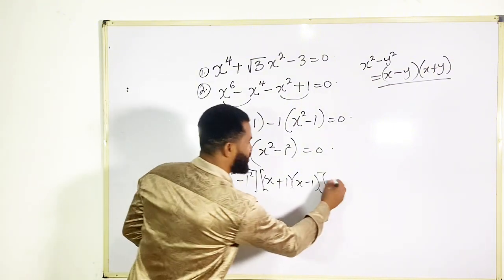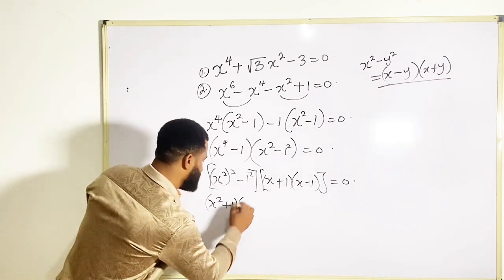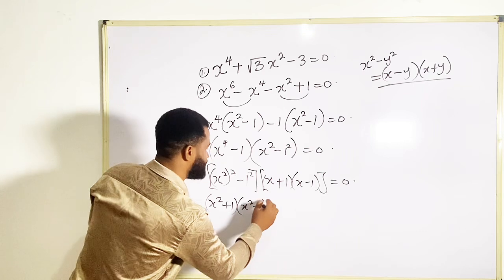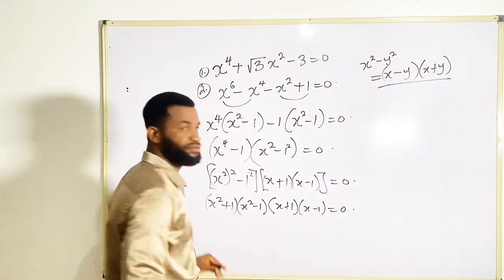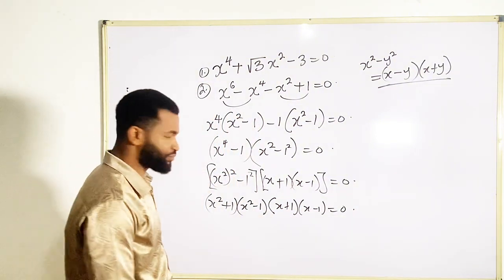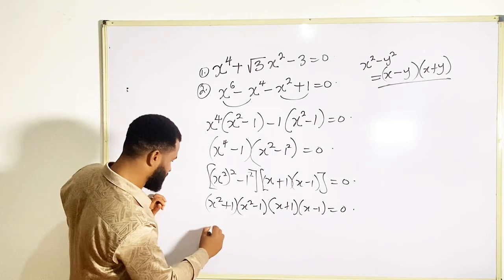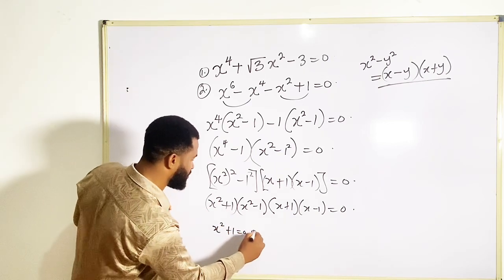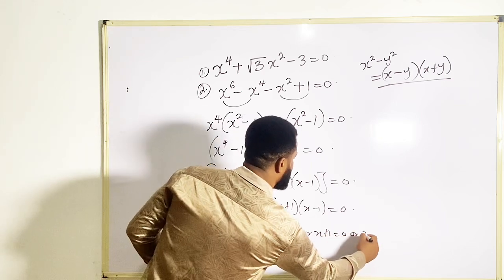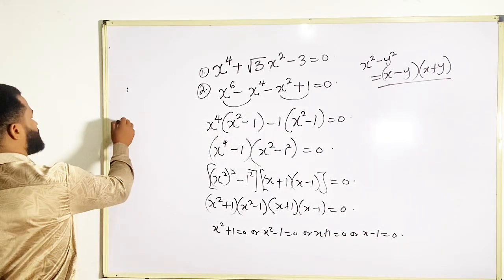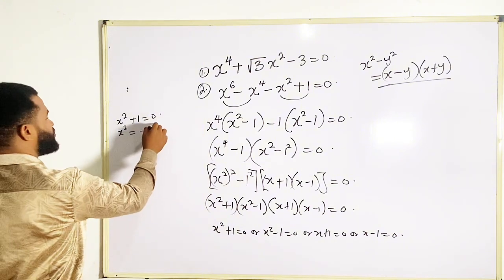So I'm going to conclude by saying, since it's equal to zero, I'm going to have: x raised to power two plus one, in brackets, times x raised to power two minus one, times x plus one, times x minus one, all equal to zero. At this point everything is equal to zero, therefore: x squared plus one equals zero, or x squared minus one equals zero, or x plus one equals zero, or x minus one equals zero. For x squared plus one equals zero, x squared equals minus one — this is going to be a complex root.